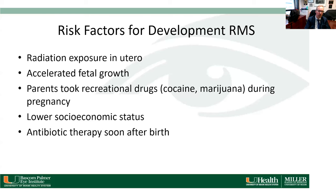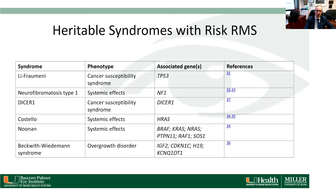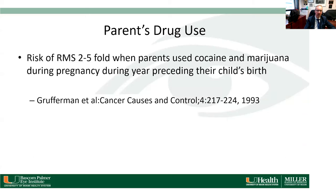Returning to rhabdomyosarcoma — what are the risk factors for developing this most common malignant tumor of childhood? There are thought to be several: radiation exposure in utero, accelerated fetal growth, parents taking recreational drugs during pregnancy such as cocaine and marijuana, lower socioeconomic status, and antibiotic therapy soon after birth. There are also heritable syndromes associated with rhabdomyosarcoma, with multiple syndromes listed.